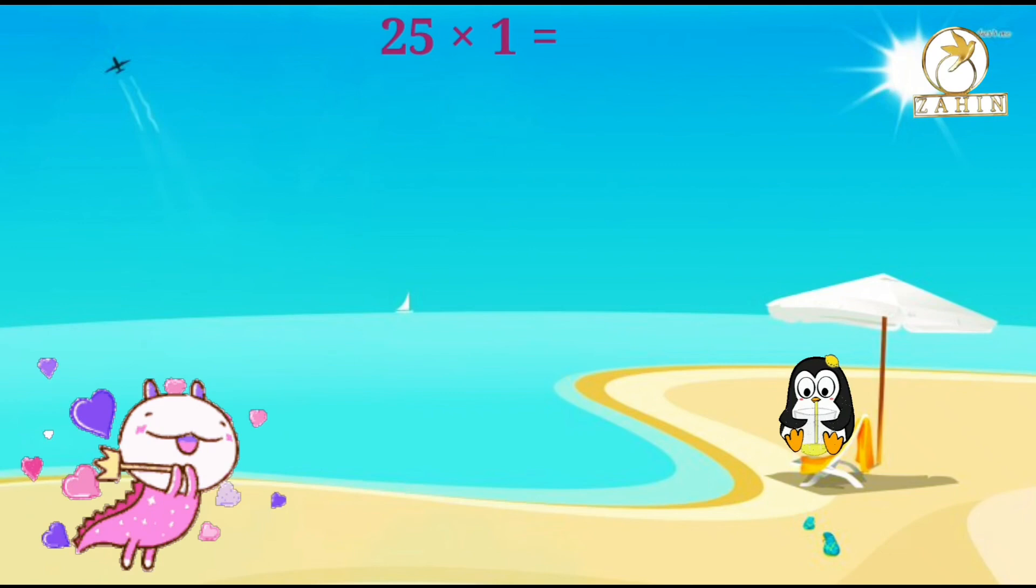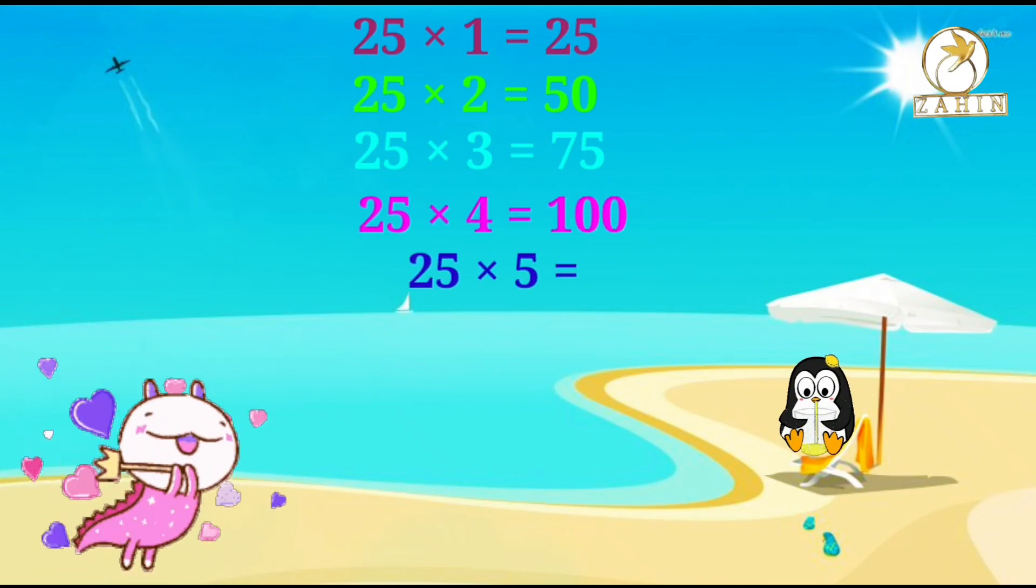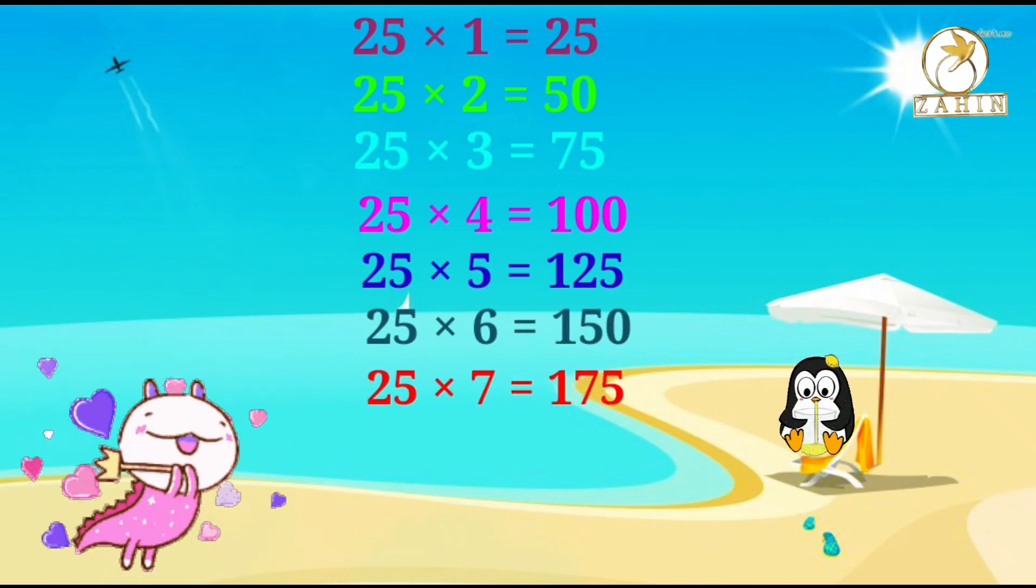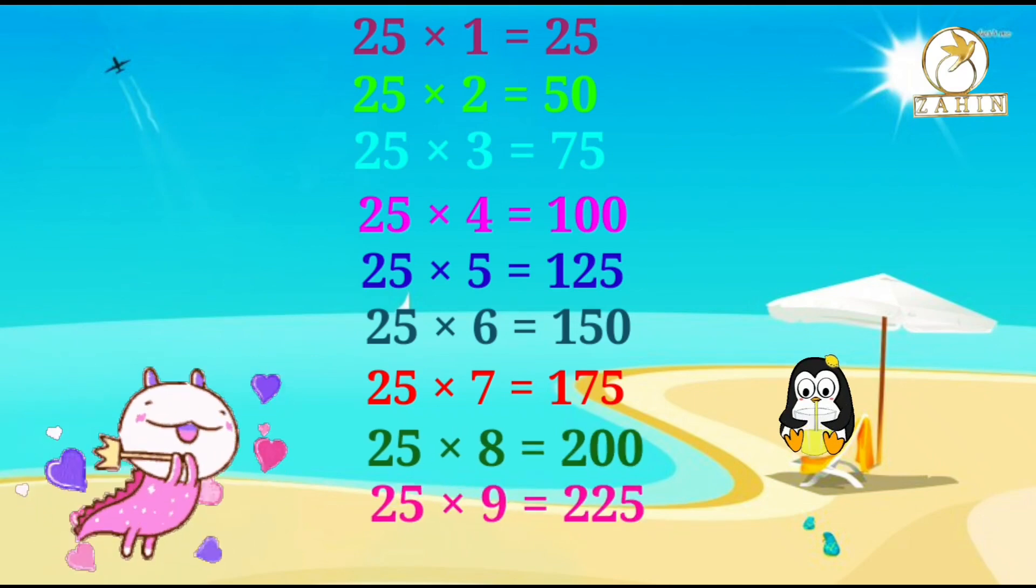25 times 1 equals 25, 25 times 2 equals 50, 25 times 3 equals 75, 25 times 4 equals 100, 25 times 5 equals 125, 25 times 6 equals 150, 25 times 7 equals 175, 25 times 8 equals 200, 25 times 9 equals 225, 25 times 10 equals 250.